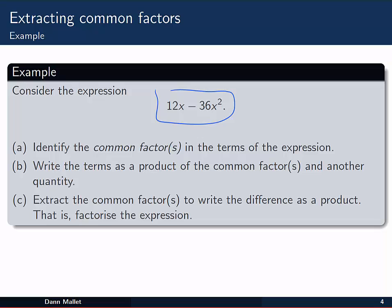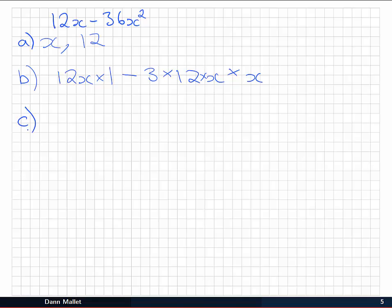So finally we're going to extract the common factors. We can see them explicitly now and write the difference as a product. So we can see the common factors, 12 and x, 12 and x. So we pull them out. And then inside brackets or parentheses, we write everything else that's left over.